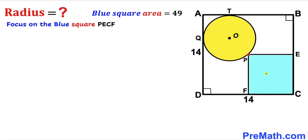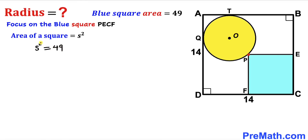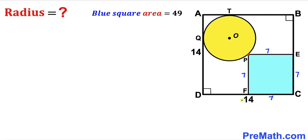Now let's focus on blue square PECF, whose area is given as 49. Recalling the area formula — Area = s² — we set s² = 49 and take the square root of both sides, giving s = 7 cm. So all side lengths of the blue square are 7 units. We can observe that side CD is 14 and side FC is 7, confirming that point P is at the center.